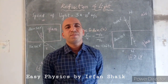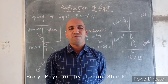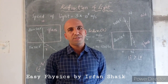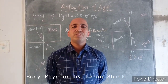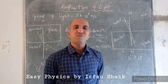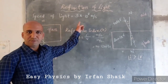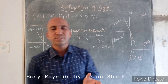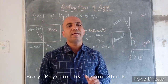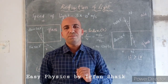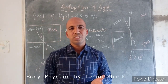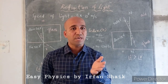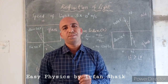Hi everyone, this is Irfan. Now we are going to discuss refraction of light — what is refraction and when we observe this phenomenon. Light travels from one medium to another medium. The speed of light in vacuum is 3 × 10⁸ meters per second, that means around 3 lakh kilometers per second. When light travels from one medium to another, the speed of light changes, and that's why the light bends — it changes its direction. This property of light is called refraction.